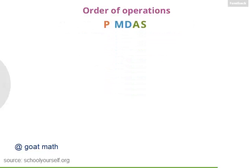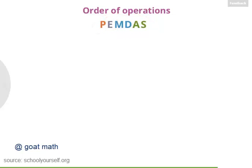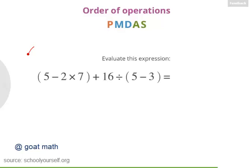Later on, you'll learn about another operation that starts with the letter E. So the thing to remember is PEMDAS. If you remember PEMDAS, you'll know the order of operations. Try using PEMDAS to evaluate one final expression.